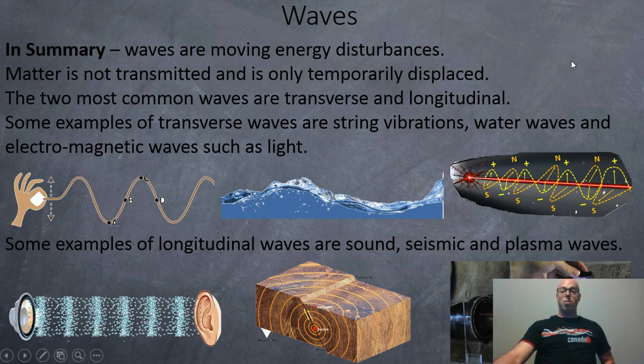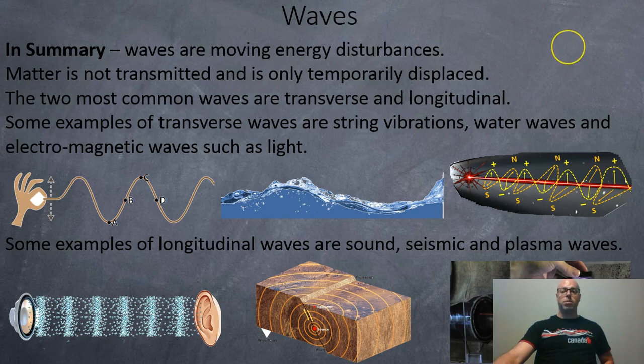So in summary, waves are moving energy disturbances. Matter is not transmitted and is only temporarily displaced. The two most common waves are transverse and longitudinal. Some examples of transverse waves include string vibrations like this, water waves, and electromagnetic waves.